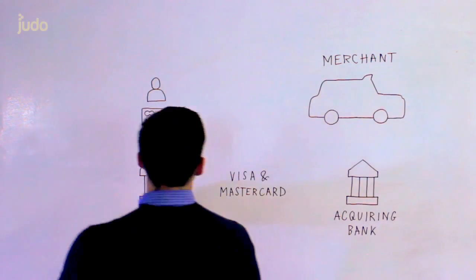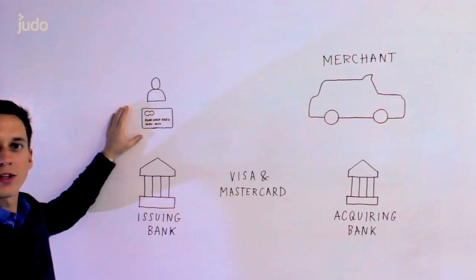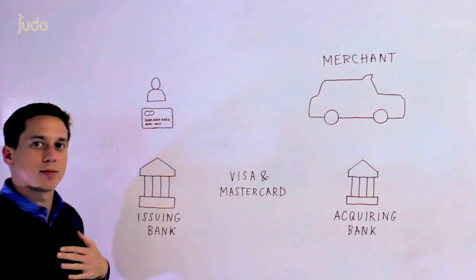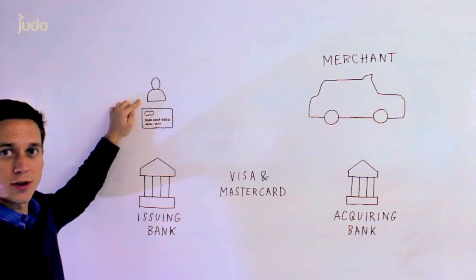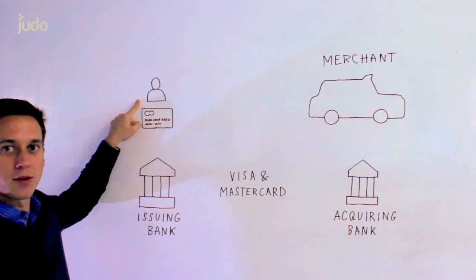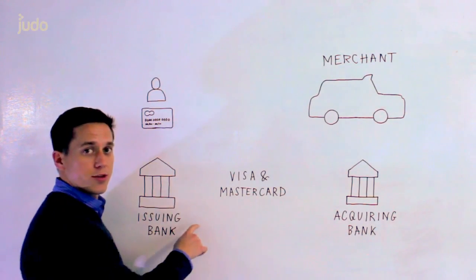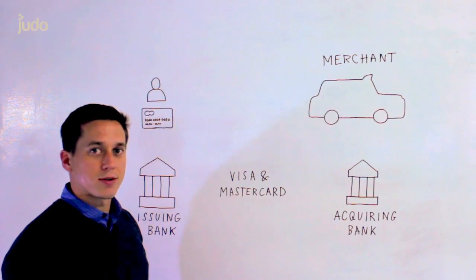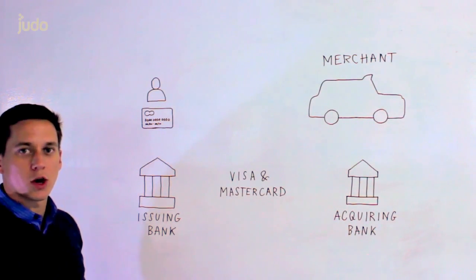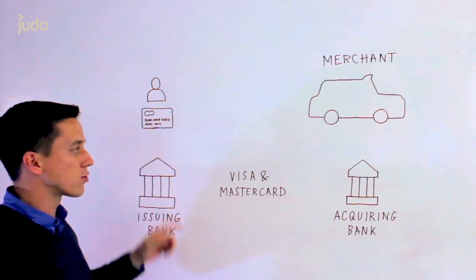Over on the customer side, or the card holder side of the equation, they've been issued this card by what's called an issuing bank. This is the bank that's saying, I'm going to take responsibility for the credit worthiness of this card holder. And when they present their card for payment, I'm going to make sure that those funds are guaranteed back to you. Again, this is all done through Visa and MasterCard and the schemes as they're known. So let's take an example of a transaction and show how the flow of information and then funds goes through these different parties.